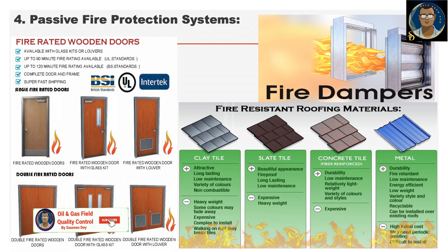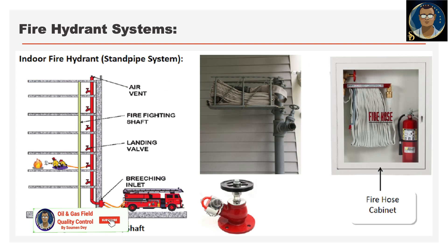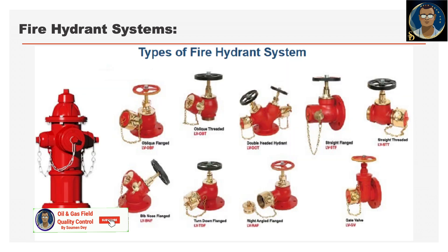The fire hydrant system is a connection point by which firefighters can tap into a water supply, and it is a component of active fire protection. There are two types: indoor fire hydrant and external fire hydrant. Installation is part of construction and the inspector should inspect the installation — that's why this video was made. You can see ideal and typical installations here; the specific installation procedure will be found in your project drawings. You can also see the distance of hydrants in a building and the types of fire hydrant systems available. It looks red — like old post office boxes — but it is actually the opening for water connections.